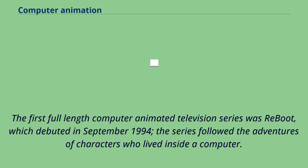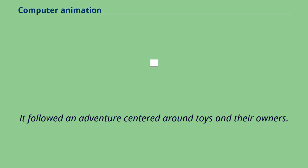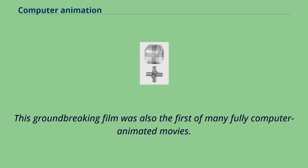The first full-length computer animated television series was Reboot, which debuted in September 1994. The series followed the adventures of characters who lived inside a computer. The first feature-length computer animated film was Toy Story, which was made by Disney and Pixar. It followed an adventure centered around toys and their owners. The movie tells the story of a cowboy doll who has to become a friend when a superhero spaceman action figure replaces him as the favorite toy. This groundbreaking film was also the first of many fully computer animated movies.